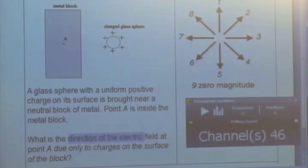What is the direction of the electric field at point A due only to charges on the surface of the block? Think carefully. Direction of the electric field at point A due only to the charges on the surface of the block.